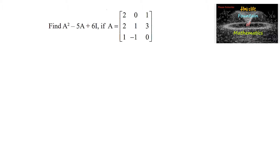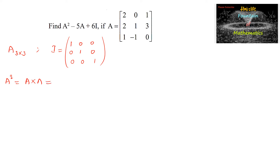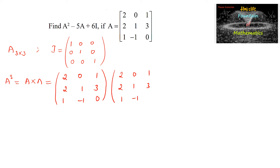Find A squared minus 5A plus 6 times identity matrix I, if A is equal to the 3×3 matrix: 2, 0, 1; 2, 1, 3; 1, minus 1, 0. Since A is a 3×3 matrix, we consider I also as a 3×3 identity matrix. Let us compute A squared, which is A times A: matrix [2,0,1; 2,1,3; 1,-1,0] multiplied by [2,0,1; 2,1,3; 1,-1,0].